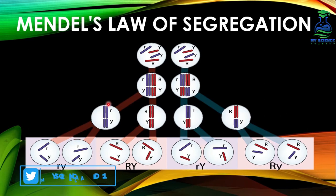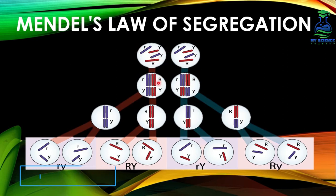As we know, in diploid organisms, genes are present in pairs for any specific trait. For example, gene pairs R and r, capital Y and small y, are for the traits of round seed and wrinkled seed, and yellow seed and green seed in a pea plant. But during gamete formation, these pairs of alleles get separate from each other.